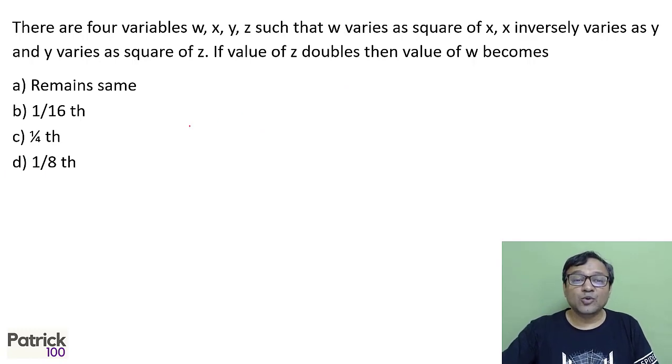There are four variables. W varies as square of x. x varies inversely as y. So x squared will vary inversely as y squared. y varies as square of z. That means this will be z raised to 4. So z doubles.